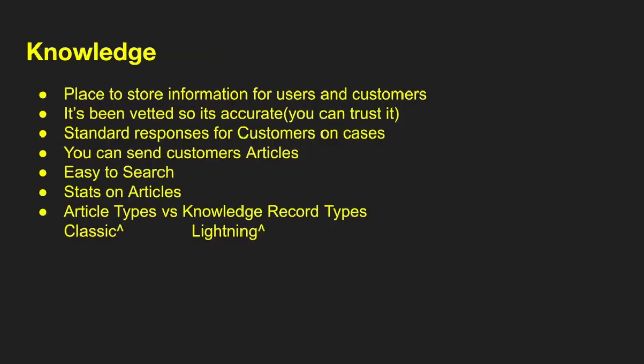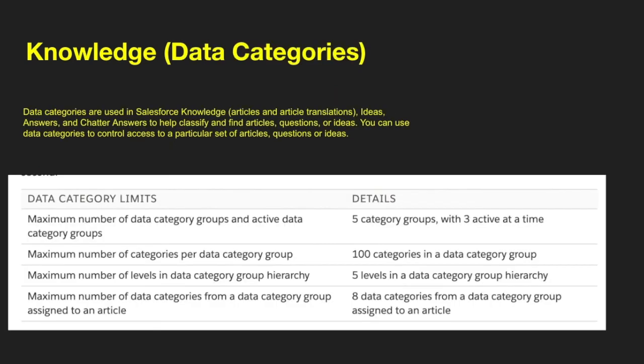With Knowledge, this is a place to store information for users and customers. It's been vetted, so it's accurate — you can trust it. It allows standard responses for customers on cases, you can send articles to customers, it's easy to search within Salesforce, and you can get statistics on articles. Note: article types are a Classic feature, while knowledge record types are used in Lightning. For data categories, you can have up to five category groups with three active at a time, up to 100 categories in each group, five levels of hierarchy, and you can only assign eight data categories to any article.